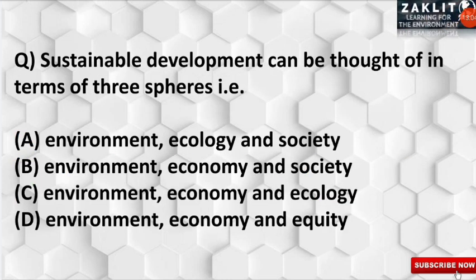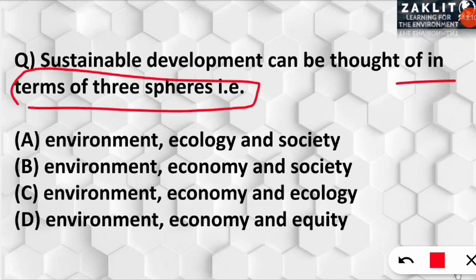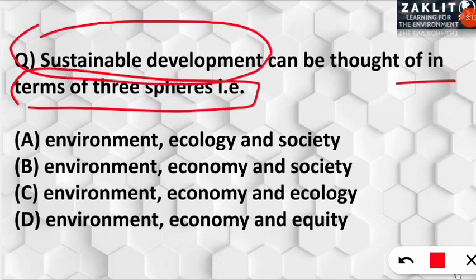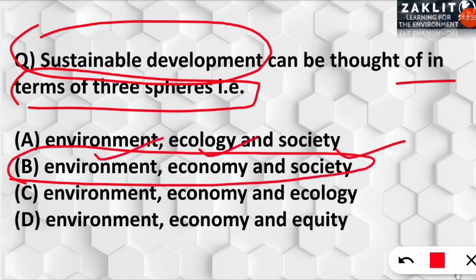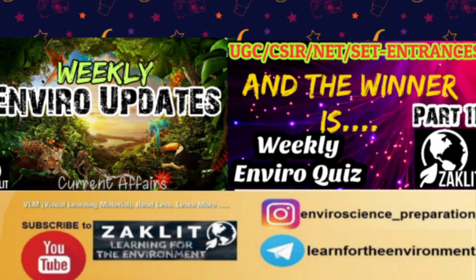The next question: sustainable development can be thought of in terms of three spheres. Sustainable development means using resources very efficiently and preserving them for future generations. The correct option is B: the three spheres are environment, economy, and society. If we consider these three things together and use them efficiently, it leads to the sustainable development of our society.